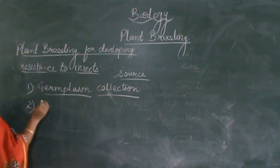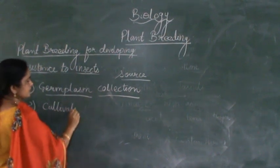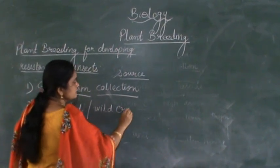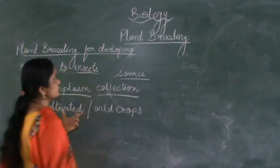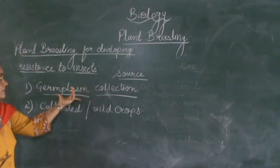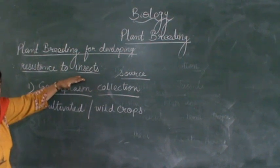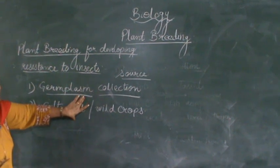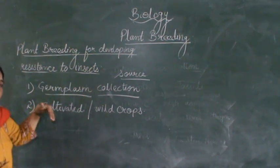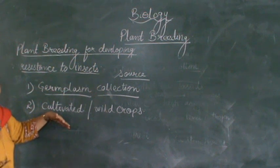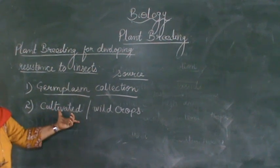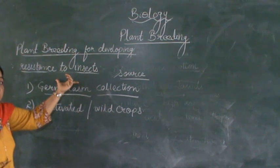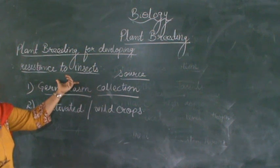We can also get genes from the cultivated crops or from the wild varieties of the crop — all of these can provide genes for developing resistance towards insects. Many breeding programs have been done where hybrid varieties of good quality plants have been selected from the germplasm and hybridized to produce a plant which gives high yield and at the same time develops high resistance to insects.